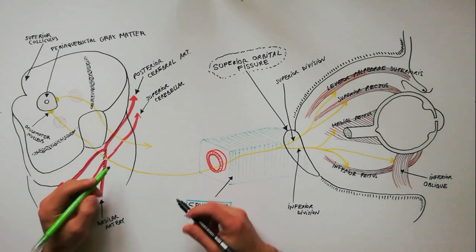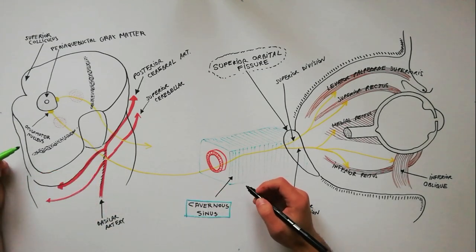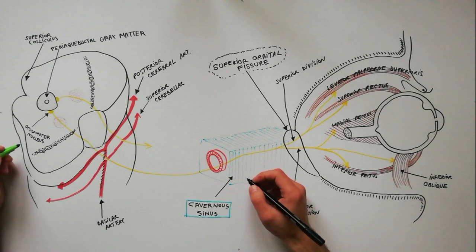The oculomotor nerve also contains parasympathetic fibers, which will be indicated using the green color.